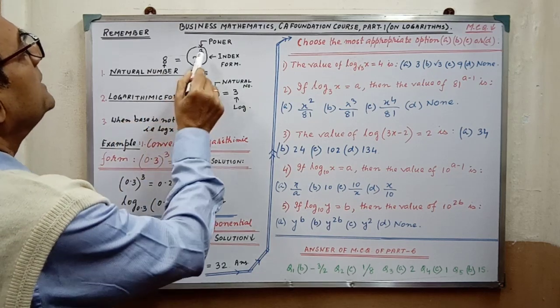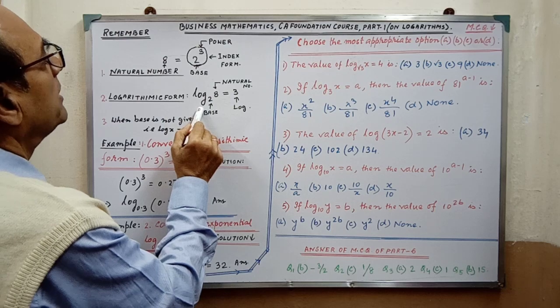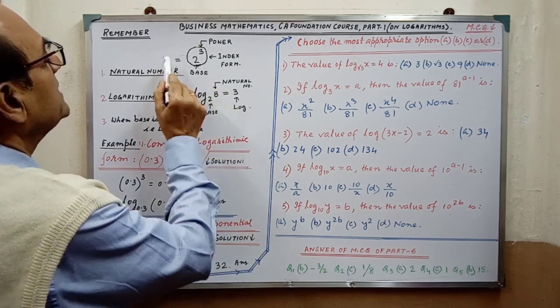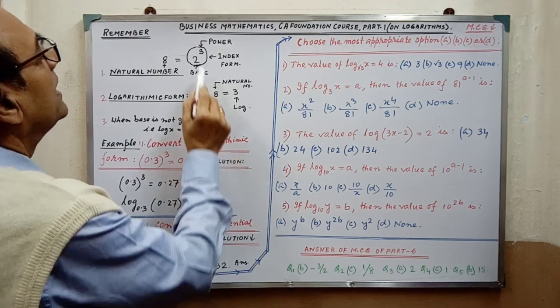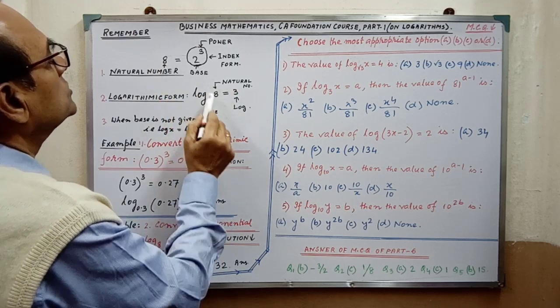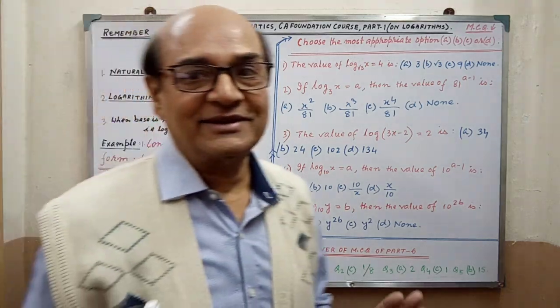Similarly, logarithmic form - this index form we may convert into logarithmic form. Here base is 2. Number is 8, and power will be log. That is, 3 is the log of 8 whose base is 2. These two things you have to understand clearly.